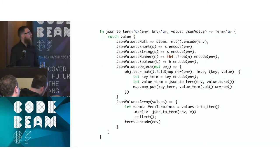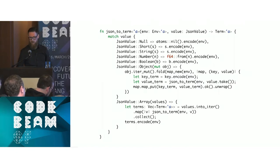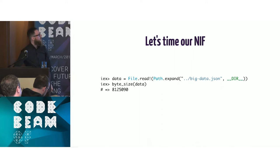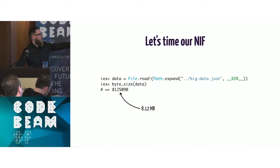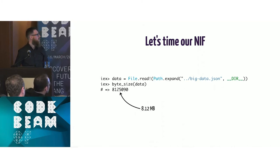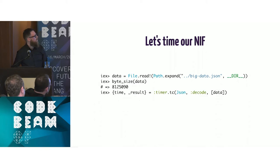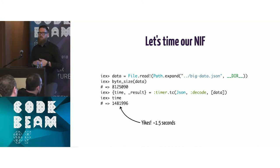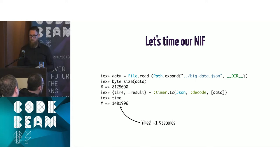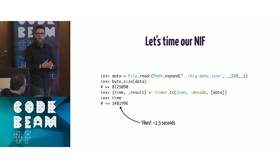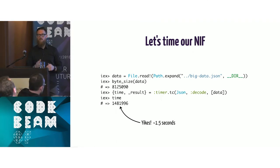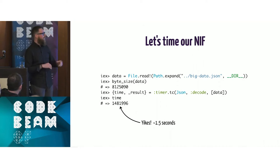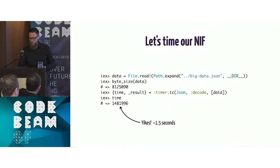Let's time this NIF. With an eight-megabyte JSON file and timer:tc, this thing takes 1.5 seconds. In most languages if it takes a long time you just deal with it — Ruby's JSON parser is all written in C. But there's actually a problem when you're dealing with the Erlang runtime.